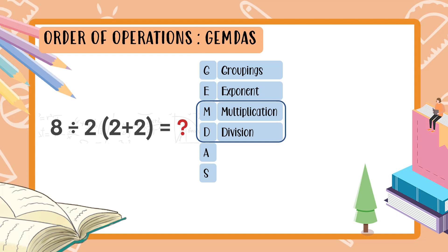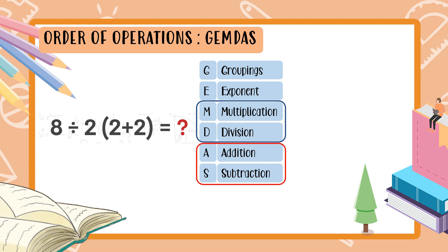After solving multiplication and division, we move to AS — Addition and Subtraction. Same as MD, addition and subtraction are also partners. Whichever comes first from the left side, that is what you do first.